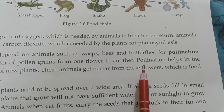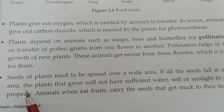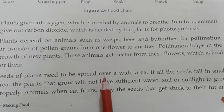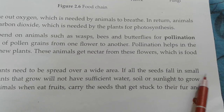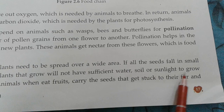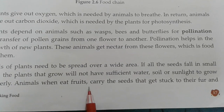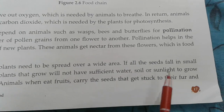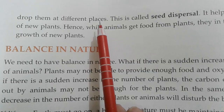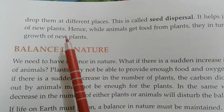These animals get nectar from flowers, which is food for them. Seeds of plants need to be spread over a wide area. If all the seeds fall in a small area, the plants that grow will not have sufficient water, soil, or sunlight to grow properly. Animals, when they eat fruits, carry seeds that get stuck to their fur and drop them in different places. This is called seed dispersal, and it helps in the growth of new plants.